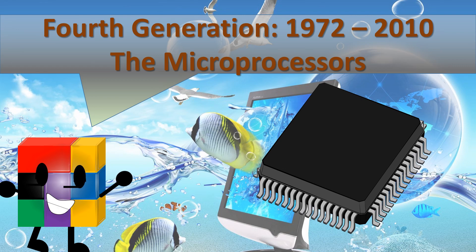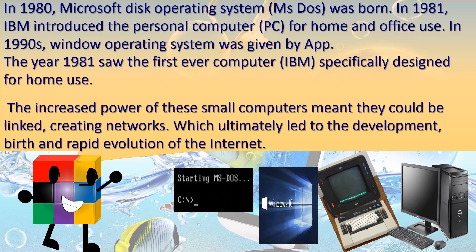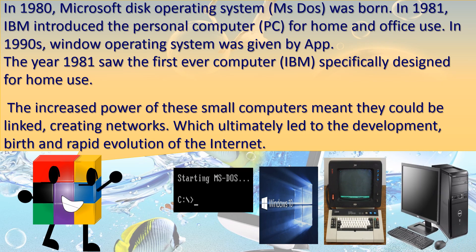Fourth generation, 1972 to 2010: the microprocessors. In 1980, Microsoft Disk Operating System, MS-DOS, was born. In 1981, IBM introduced the personal computer, PC, for home and office use. In the 1990s, the Windows operating system emerged. The year 1981 saw the first IBM computer specifically designed for home use. The increased power of these small computers meant they could be linked, creating networks, which ultimately led to the development and rapid evolution of the internet.